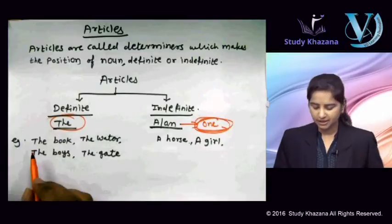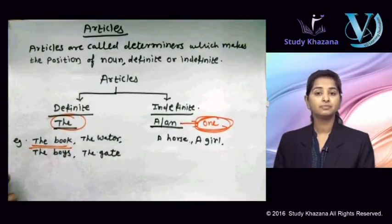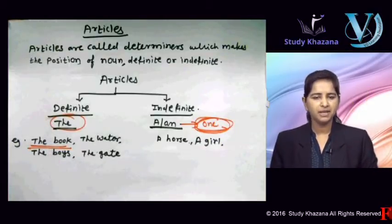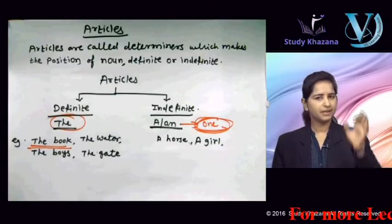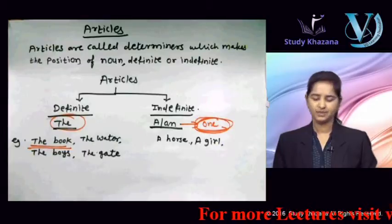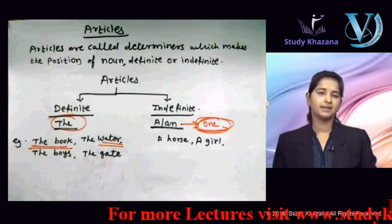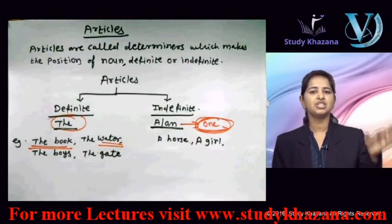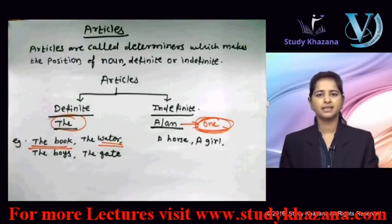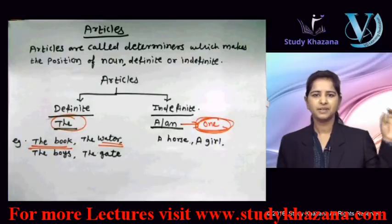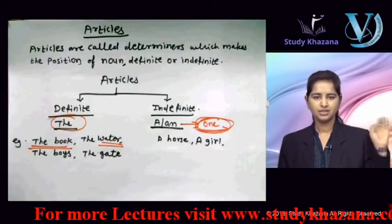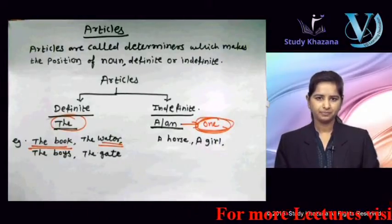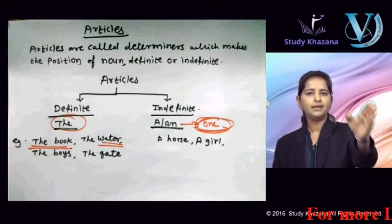Example of definite article 'the': 'The book on the table is mine' — jo kitaab table pe rakhi hai woh meri hai. Now, 'a do water' — kuch bachche kahenge ki water to uncountable noun hai, isme 'the' kaise lagaya? So guys, jab hum specific cheezon ki baat karein tab article 'the' ka use hoga. For example: 'The water of that pond is impure' — usi talab ka paani ganda hai.